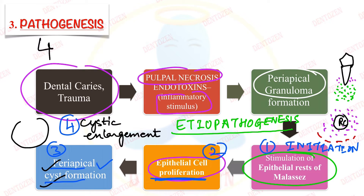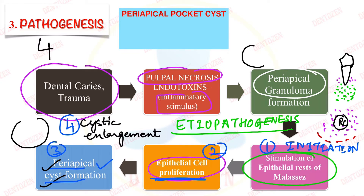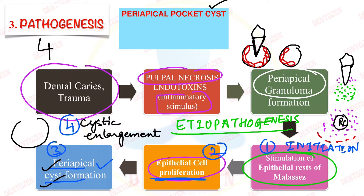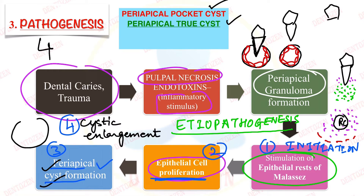Sometimes we have a cyst in which the epithelial lining is not complete because there is an obstruction due to the apex of the root of the tooth lying in the lumen of the cyst — this is known as a periapical pocket cyst. But sometimes we can see a complete epithelial lining because there is no obstruction; the cyst is separated from the apex of the root — this is called a periapical true cyst.